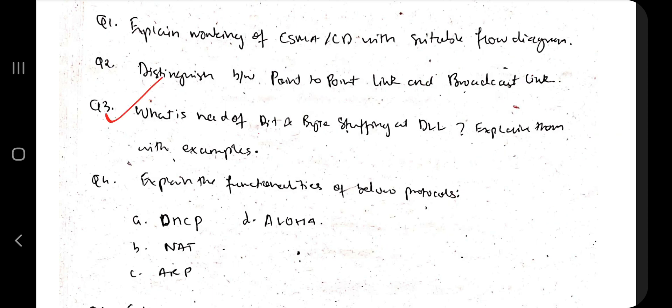Moving on, we have the next question which is explain bit and byte stuffing in DLL. Explain them with examples. What is bit and byte stuffing? When is it needed? Why is it needed? What happens if you don't use it? All those things you have to mention in detail.